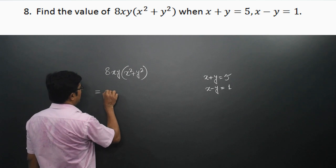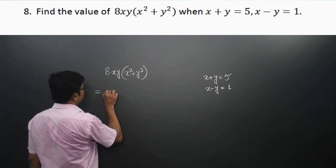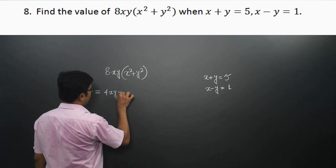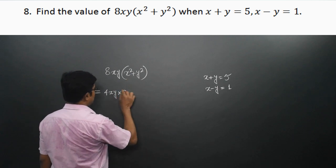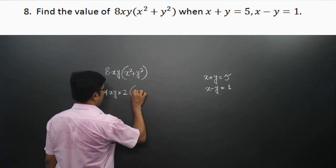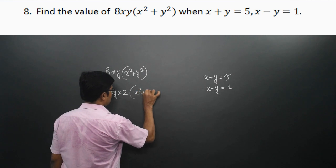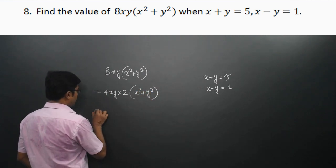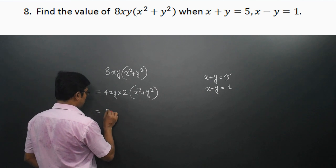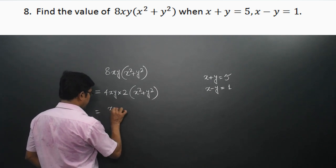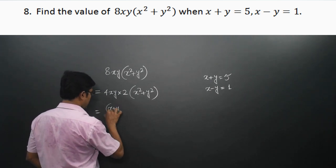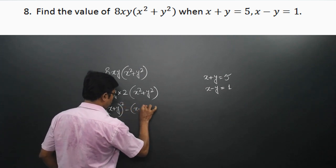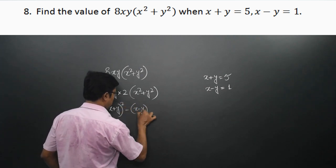8xy can be written as 4xy × 2. That is, this is equal to 4xy × 2 × (x² + y²). Now, 4xy is equal to (x + y)² − (x − y)².